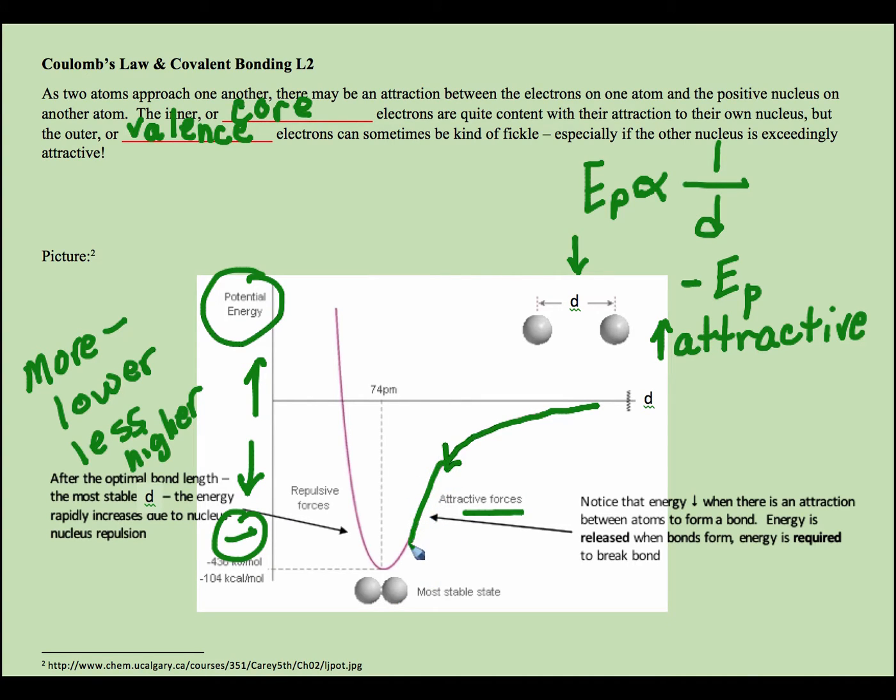They ultimately, the two atoms, like let's say it's two fluorine atoms getting closer together, and they reach what I like to call this sweet spot, which is their bond length. Their bond length.